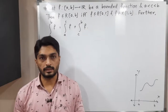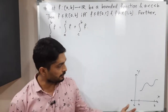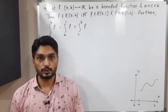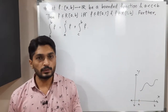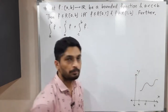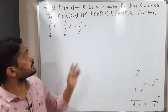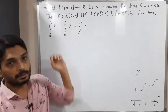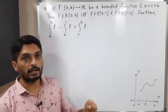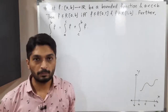Let us discuss this result. We have a function f defined on the closed interval [a, b], which is a bounded function, and we have one point c between a and b. We have to prove that the function is Riemann integrable on [a, b] if and only if it is Riemann integrable on [a, c] and Riemann integrable on [c, b].